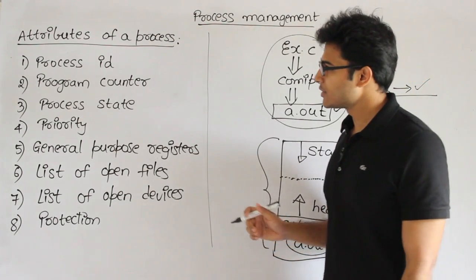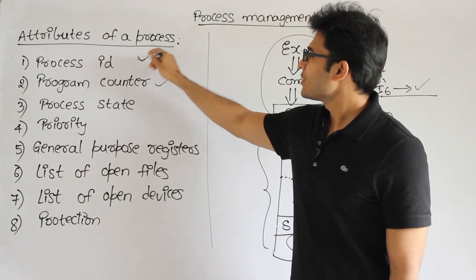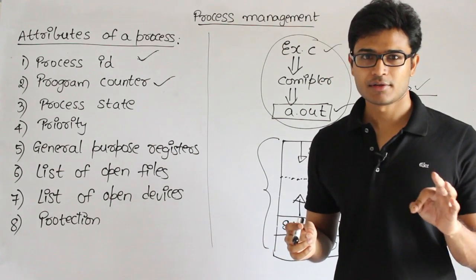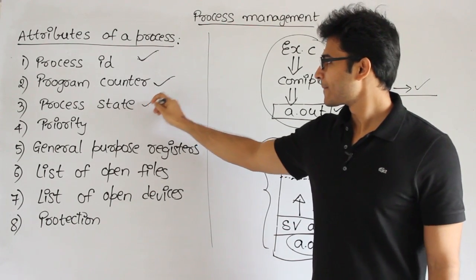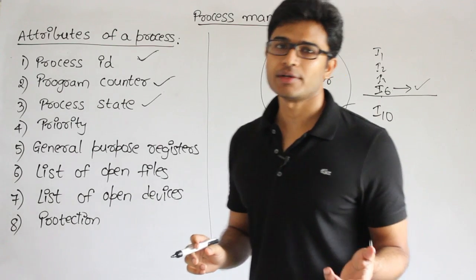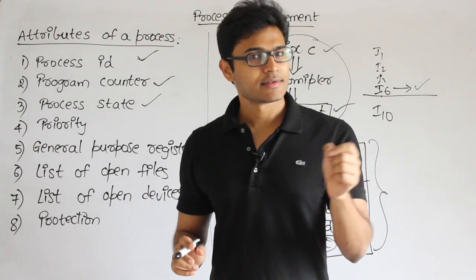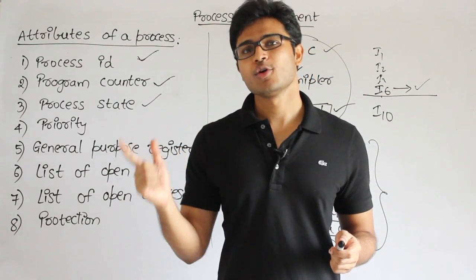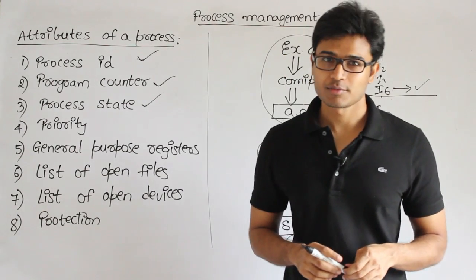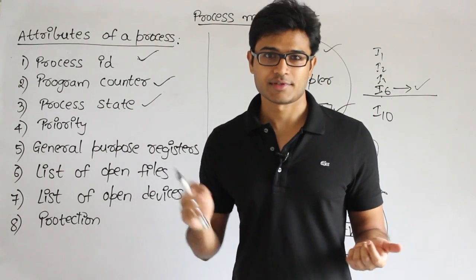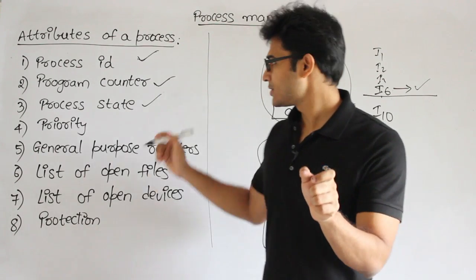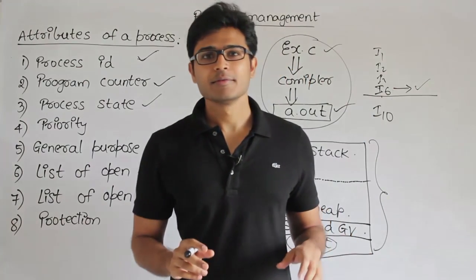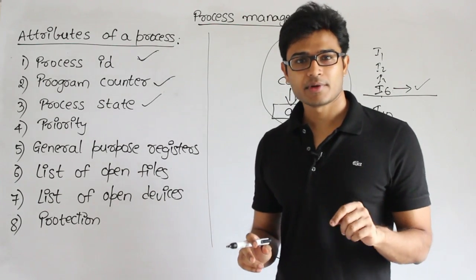Next is Process State — there are various states like ready to run, running, blocked, or waiting. Next is Priority. Priority shows the importance: whenever any process is created, the operating system assigns a priority. A process with higher priority is supposed to execute first compared to processes with lower priority. For example, an operating system process should be given the highest priority because it is more important than a user process. Priority is a number given to the process when it is created.